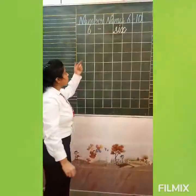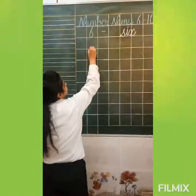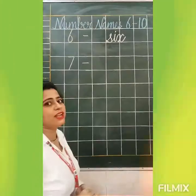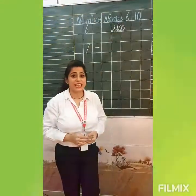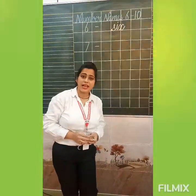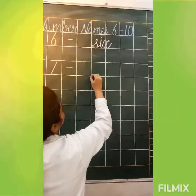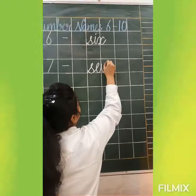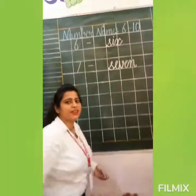Now tell me, what will be the next number after 6? After 6 is number 7. So we will write here the spelling of number 7. Speak with me students — what is the spelling of 7? S-E-V-E-N. 7. Speak with me again. S-E-V-E-N. You have to learn and write also, okay? So we will write here the spelling of 7. S-E-V-E-N. 7. Very good.